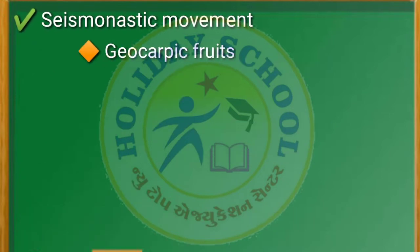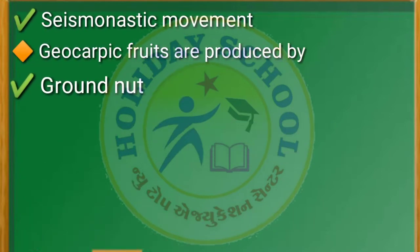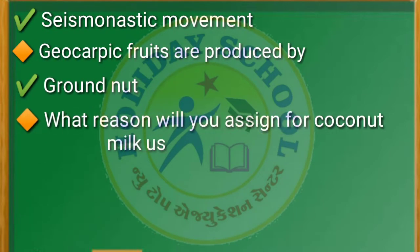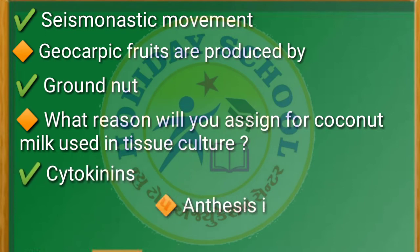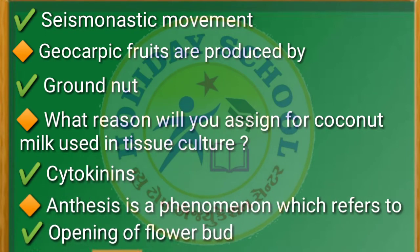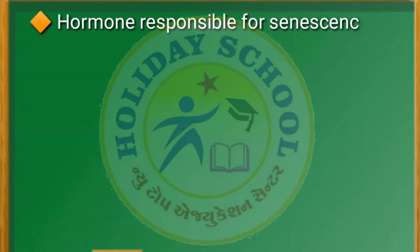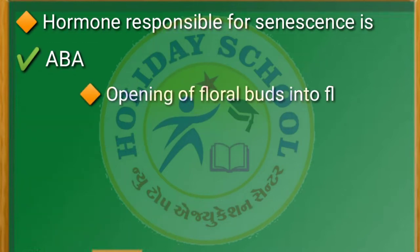Next question: the closing and opening of the leaves of Mimosa pudica is due to — the answer is seismonastic movement. Next question: geocarpic fruits are produced by — the answer is groundnut. Next question: what reason will you assign for coconut milk used in tissue culture? The answer is cytokinin.